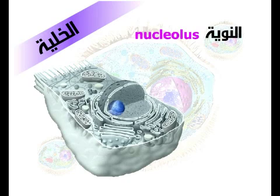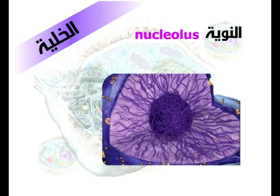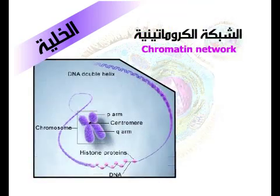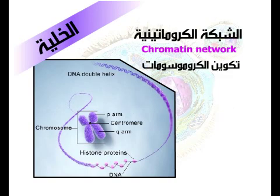أولاً: النوية، وهي تركيب كروي عادةً تقع داخل النواة، وقد تحتوي النواة على أكثر من نوية واحدة كما في خلايا البصل. وظيفة النوية بناء الحامض النووي الريبوسومي أي تكوين الريبوسومات. ثانياً: الشبكة الكروماتينية، وهي شبكة متداخلة تنفك خيوطها أثناء الانقسام الخلوي مكونةً الكروموسومات، وهي تحمل المواد الوراثية في الخلية.